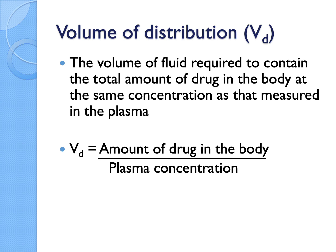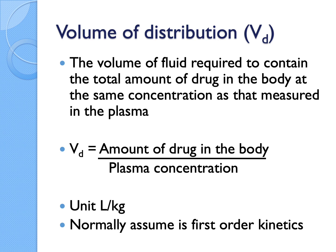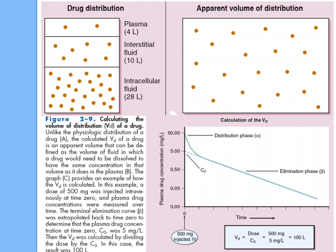The reason we use plasma concentration is that there's no other practical way to sample drug concentration in the body besides blood — it's the most acceptable way rather than cutting tissue out at different time points. So we only make estimations based on plasma concentration. The unit is liters per kg, and it's normally assumed as first-order kinetics. This is what we call apparent volume of distribution.